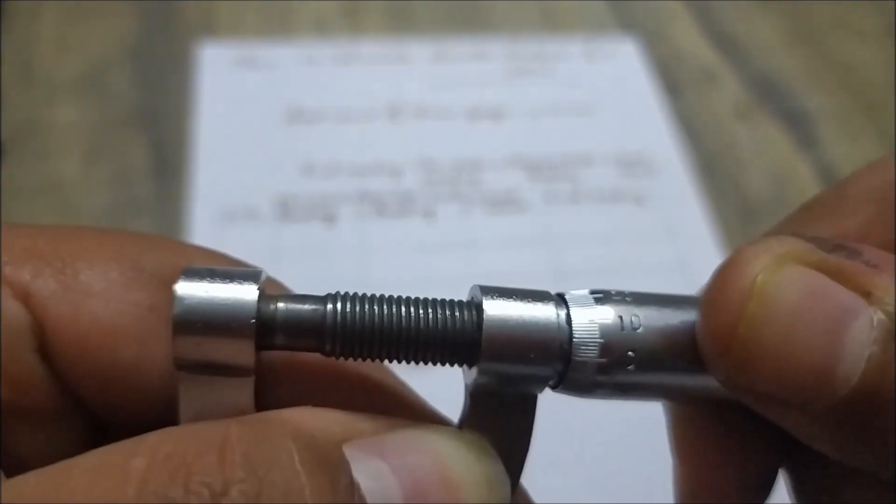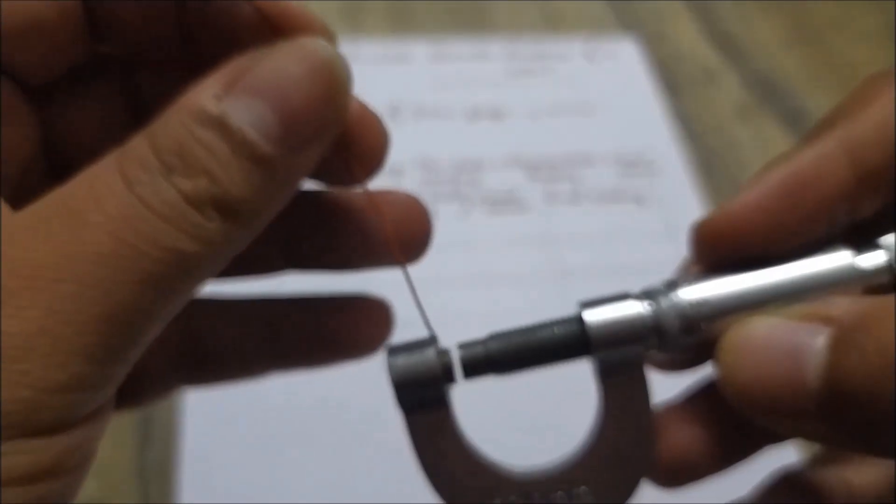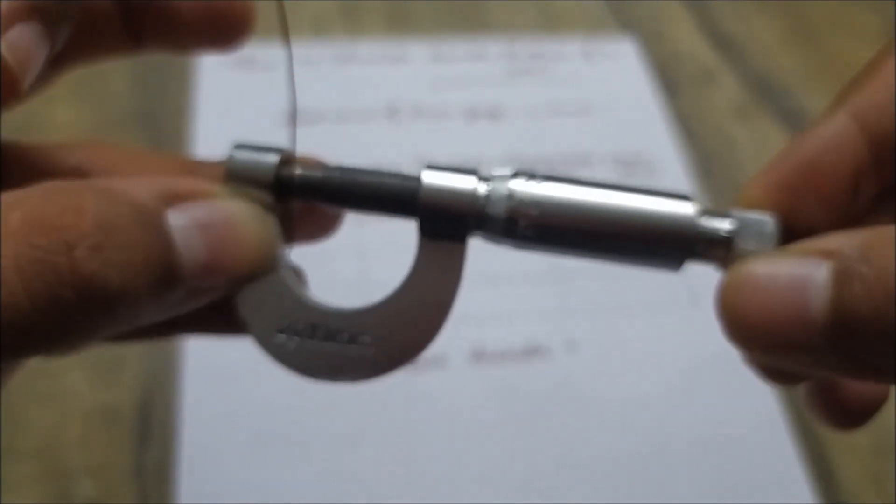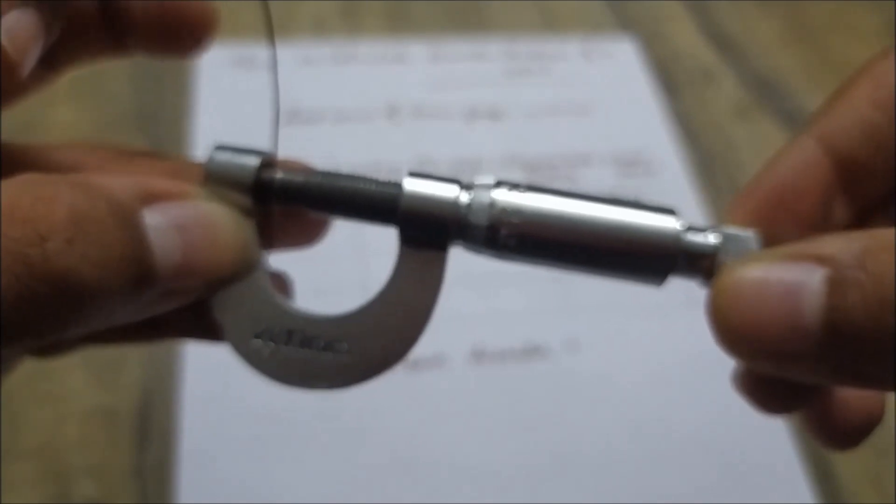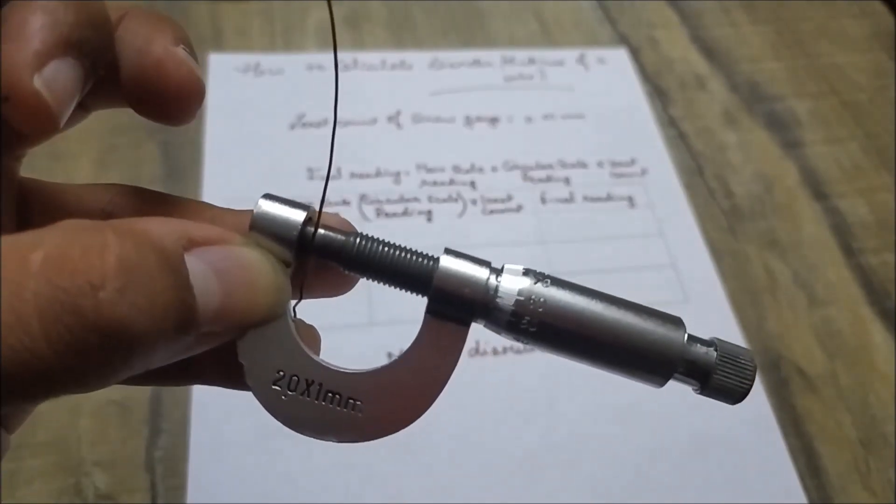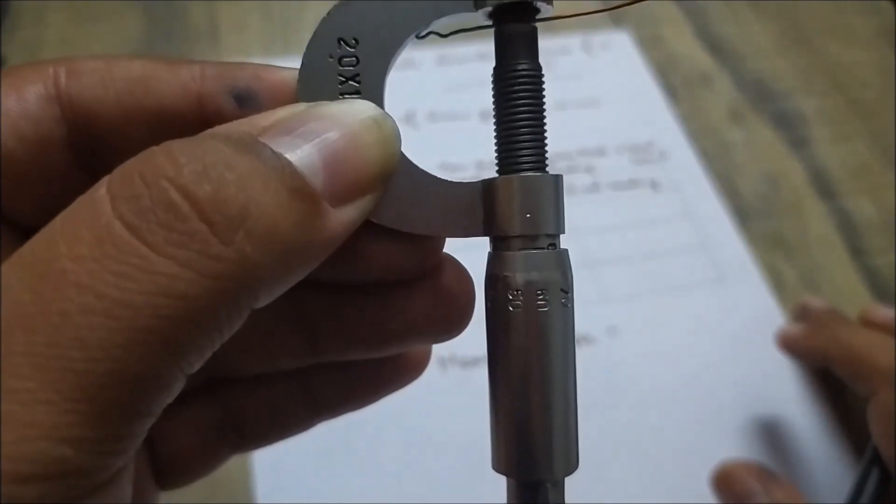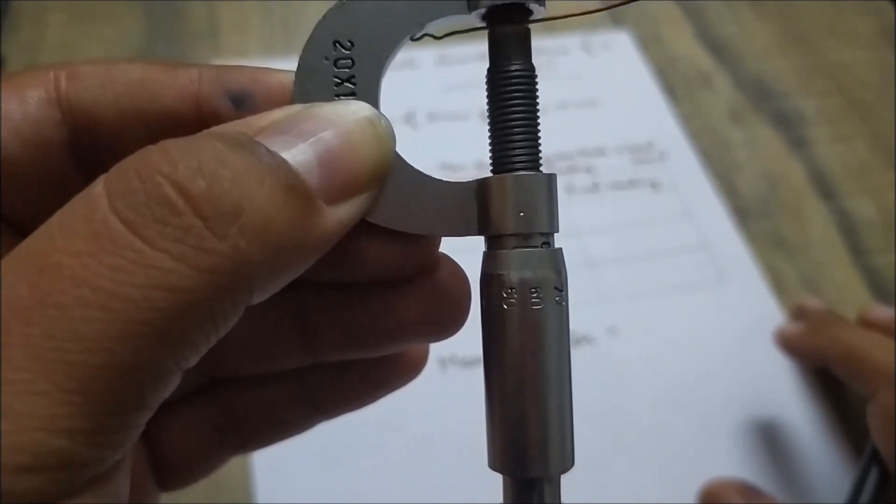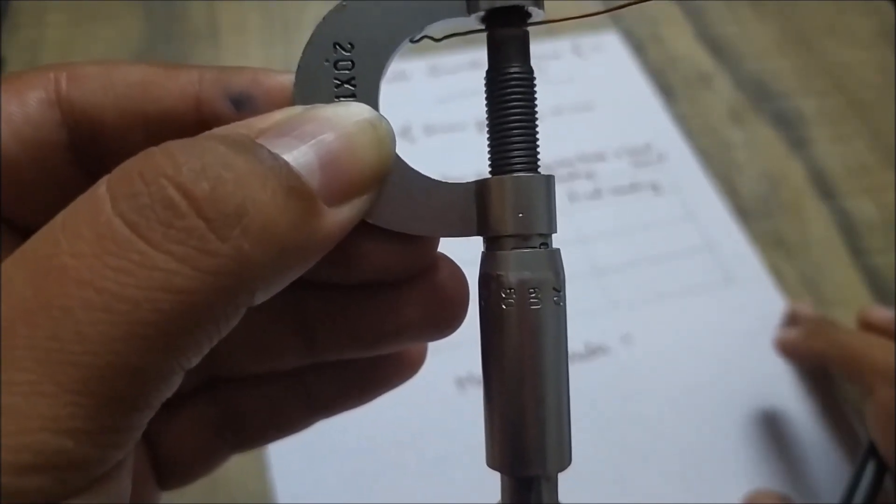Now we will move the thimble and we will place a wire between anvil and spindle. And we will move the gauge using this ratchet till you hear a sound of single tick. As now we have heard the sound of tick, now we will note down the reading. Now you can clearly see that circular scale is in between the 0th and the 1 mm division of the main scale. So your main scale reading is 0 mm.